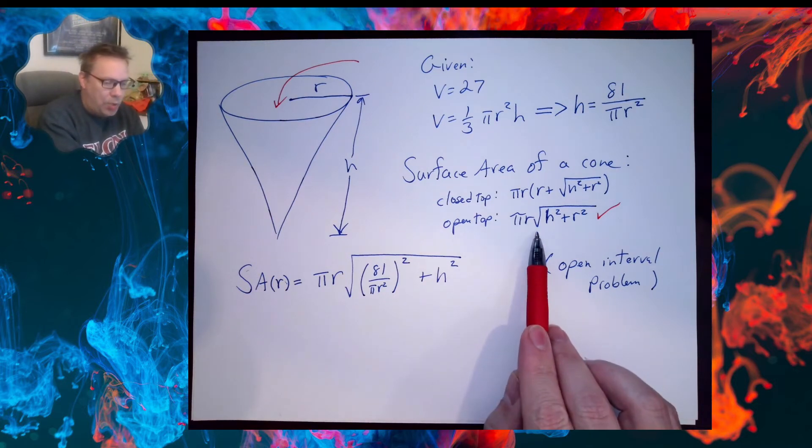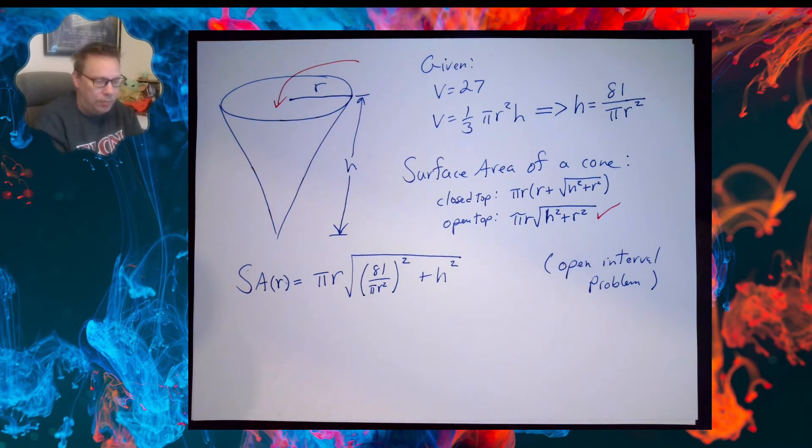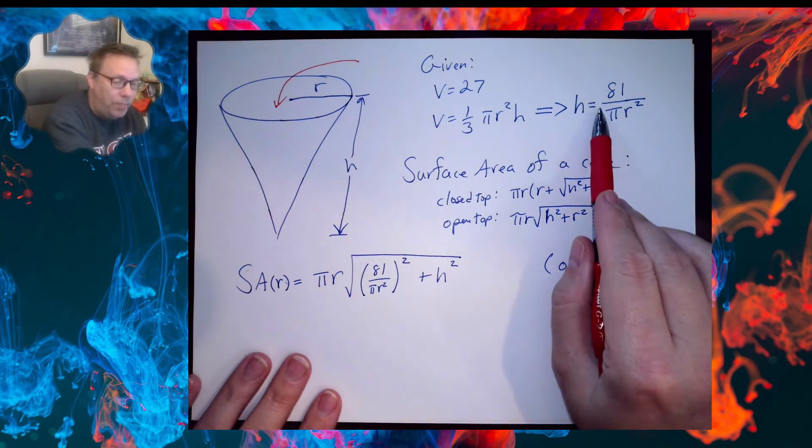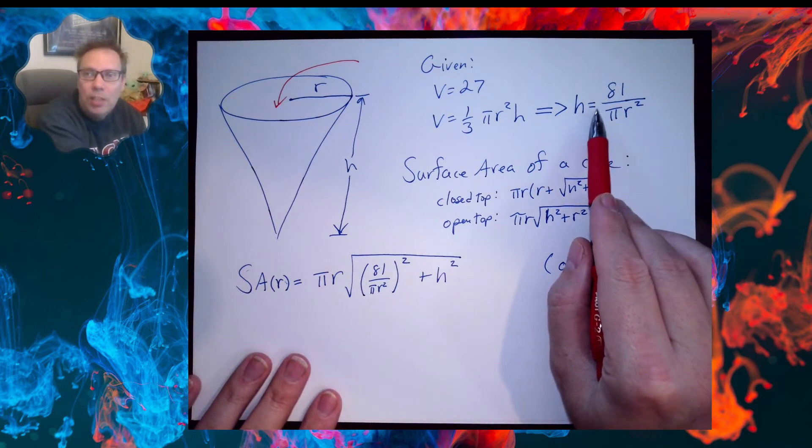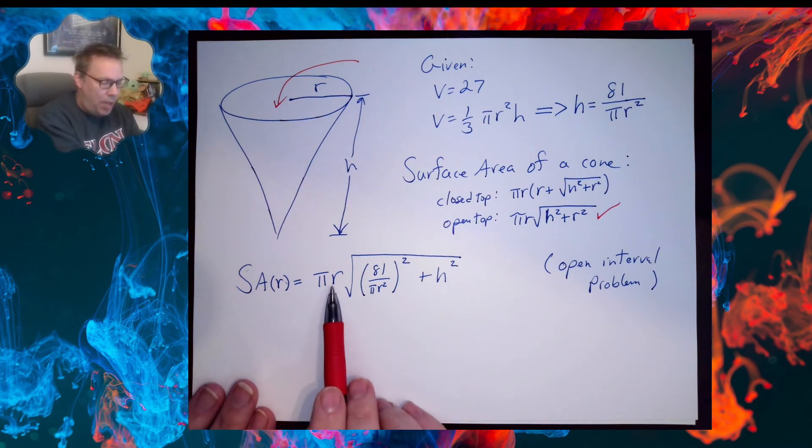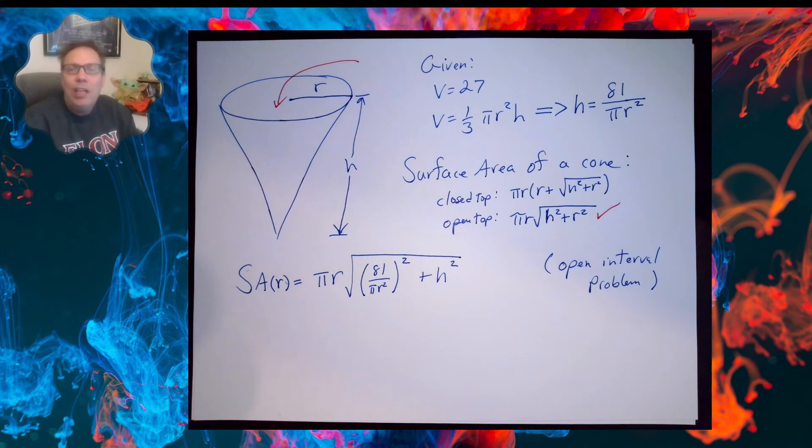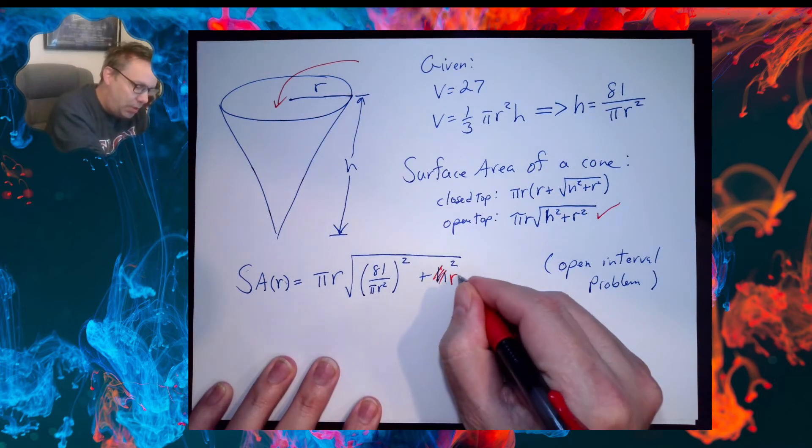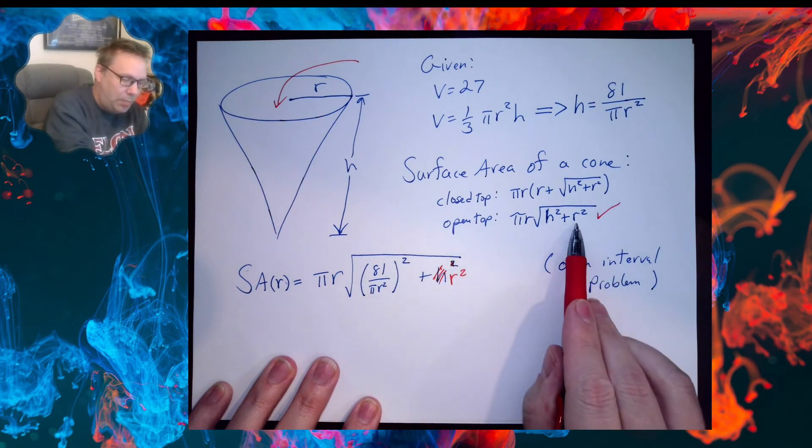π r times the square root of h² plus r². There's two variables there. I want to convert this all into one variable. What does that mean? Means solving for one of the three variables and making a substitution. So if I make that substitution I get π r times h², but h is 81 over π r squared, plus r².